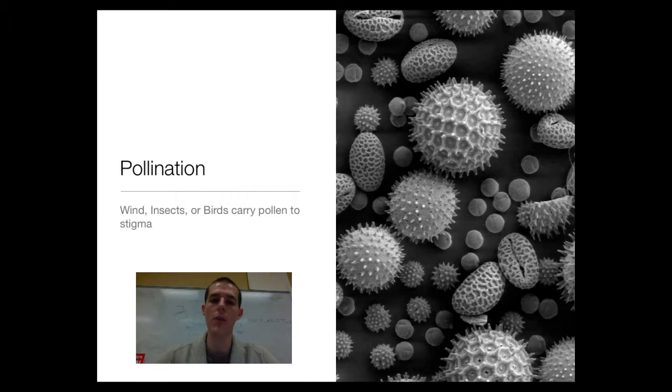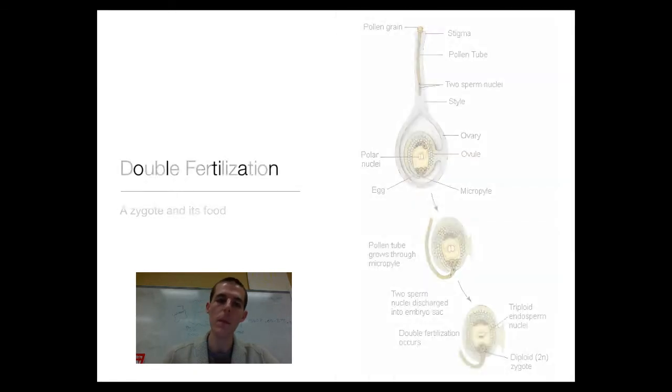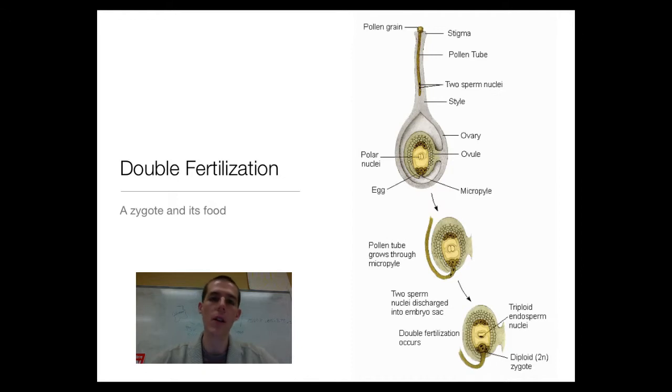Once pollination has occurred, meaning that the pollen grain has stuck to the stigma of the flower, a really interesting process happens called double fertilization. This is kind of how it goes down.